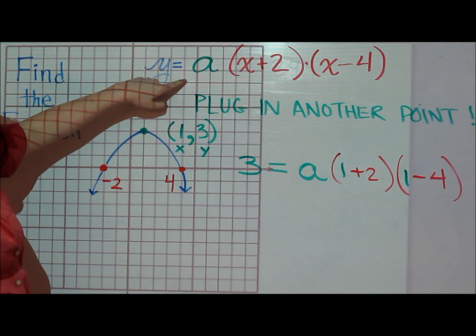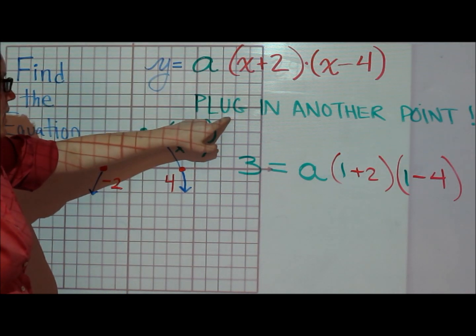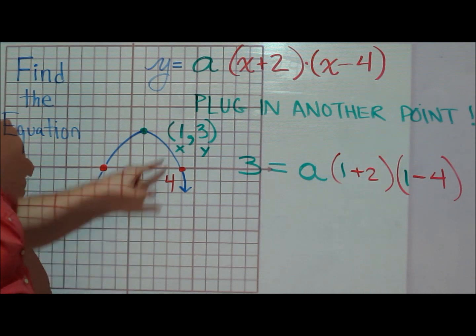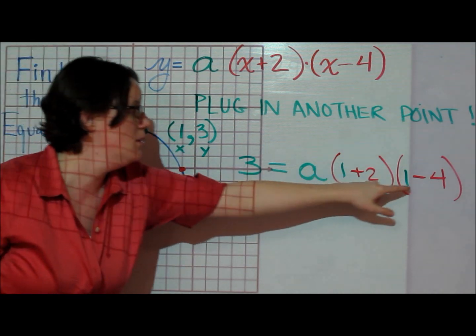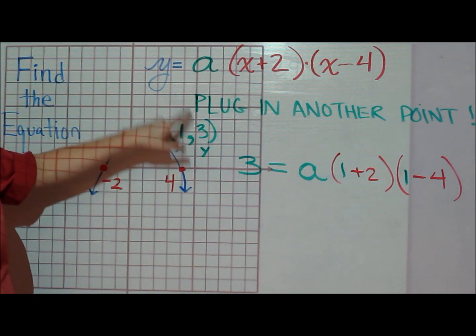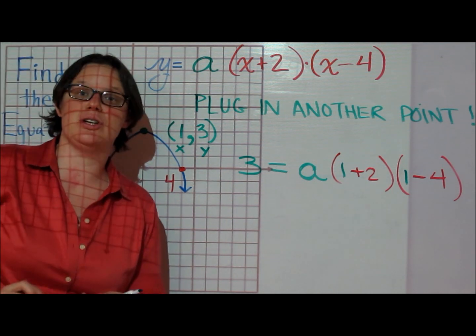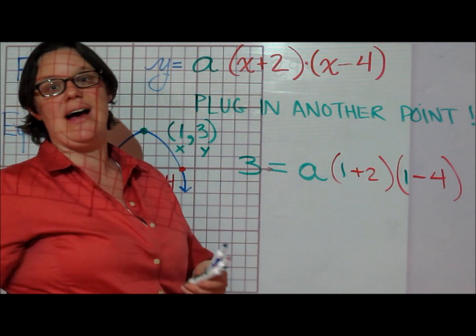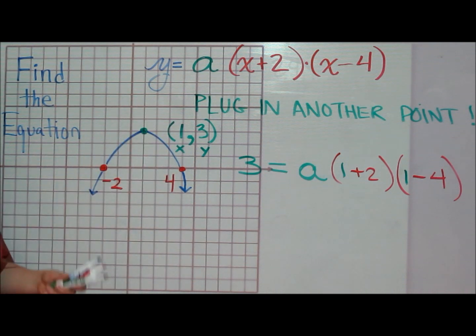General equation: I picked a point and I replaced every x with 1 and every y with 3. Now I'm going to solve for the specific a-value this parabola has.